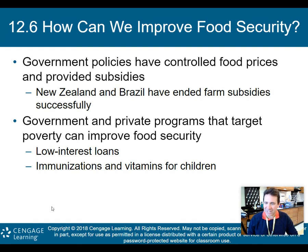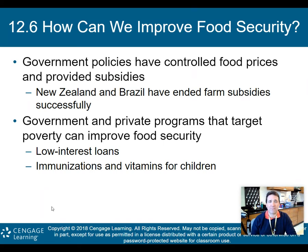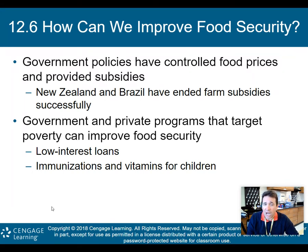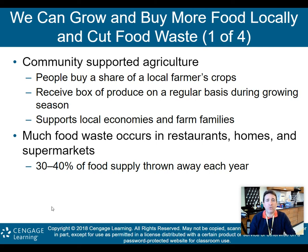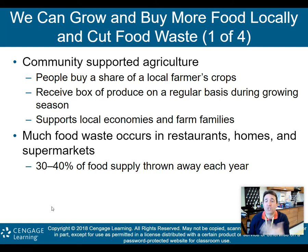How can we improve food security? Food security means people having the ability to eat. Government policies have controlled food prices and provided subsidies — New Zealand and Brazil have successfully ended farm subsidies. Government and private programs targeting poverty can improve food security through low-interest loans, immunizations, and vitamins for children. Communities can grow and buy food locally, reducing food waste. Community-supported agriculture, where people buy a share of a local farmer's crop and receive regular boxes of produce, supports local economies and farm families.